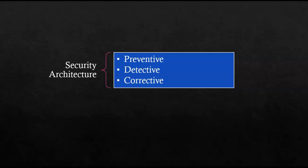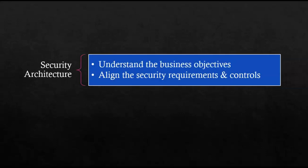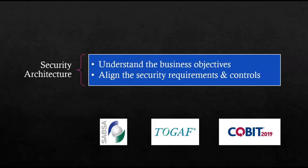It's a misconception that security architecture is nothing more than having security policies, controls, tools, and monitoring. Actually, security architecture means understanding the business objective and aligning the security requirements and controls so they can mitigate the business risk and can be justified. But due to the fast-changing advancement in technology, the security landscape is also changing at a very fast pace.